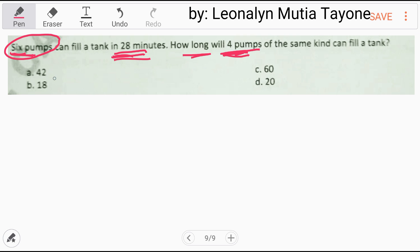Solution number one, elimination tayo. For sure, hindi yan 18 at saka 20. Dapat more than 28 minutes. Ang natira na lang ay si 42 at saka si 60. 60 is way longer na siya para sa 28 minutes. Kasi six pumps, 28 minutes. Four pumps man lang yan siya. Dapat hindi pa madoble sa 28. Ito, sobra pa sa doble yung 60. So ang sagot dito ay itong 42.